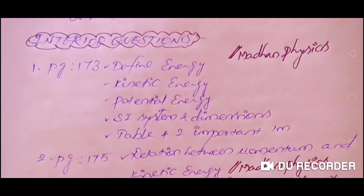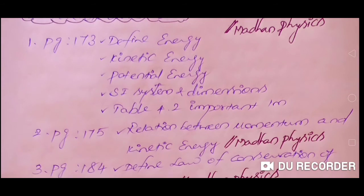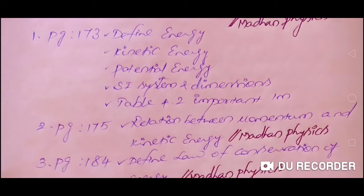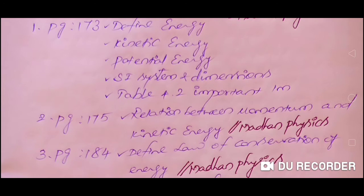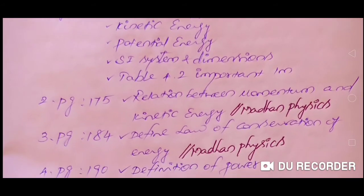Next we go for interior questions. Write down page number 173: define energy, define kinetic energy, define potential energy. After that, you see the SI system - SI units and dimensions. How to derive the dimension and SI unit - you learned this in the first lesson, right? Your teachers taught you how to do it.